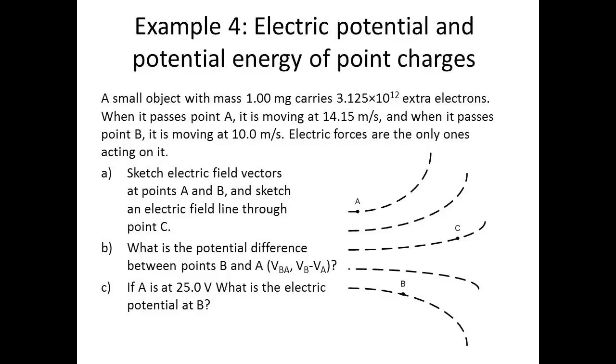When it passes point A, it is moving at 14.15 meters per second, and when it passes point B, it is moving at 10 meters per second. Electric forces are the only ones acting on it.